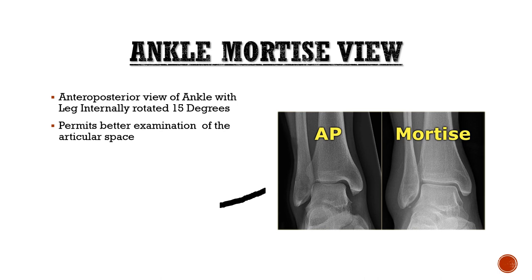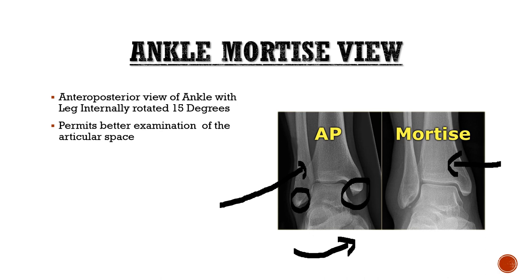The mortise view is very important. In a normal anteroposterior view, the lateral malleolus is posterior to the medial malleolus because the ankle is normally in external rotation. To make the joint line parallel, we internally rotate the ankle joint 15 degrees — this permits better examination of the articular space.